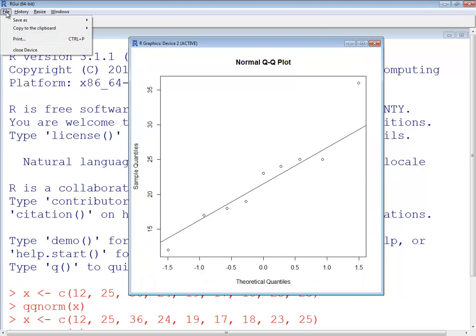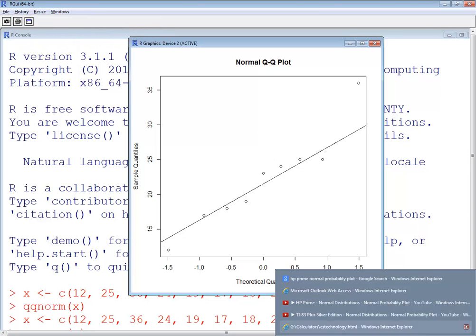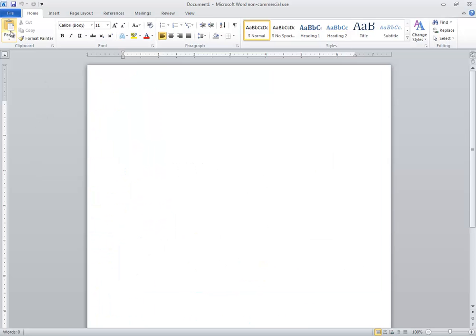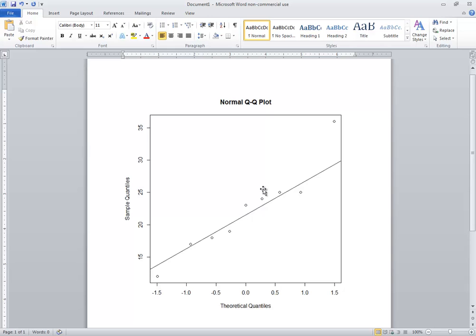Also up here you see there's a file and then there's a copy to the clipboard as a bitmap. And now if I go into Word and do a paste. A little bit cleaner right.